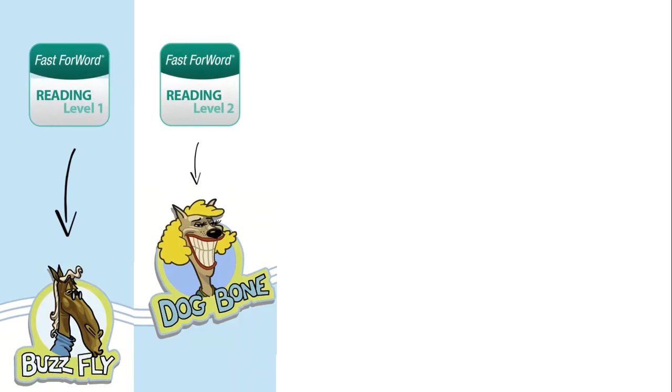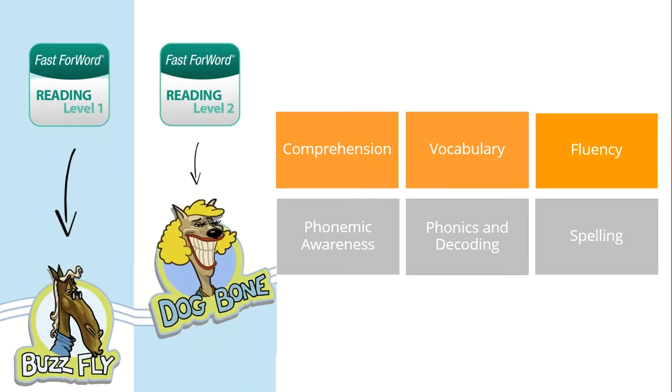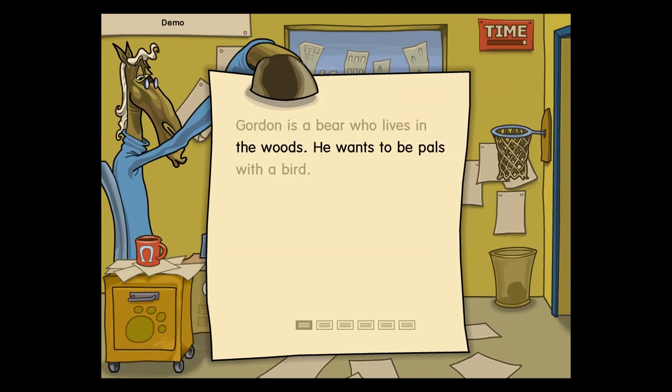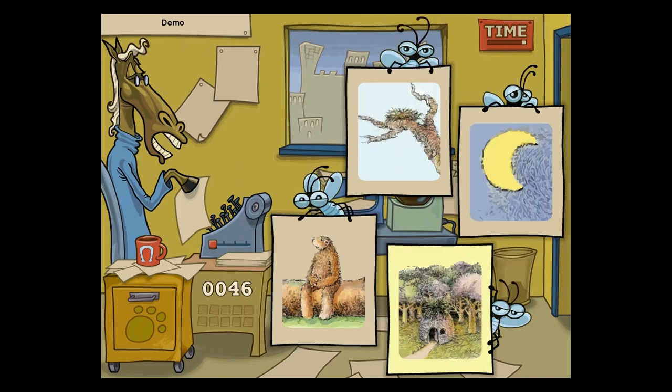Let's look at some reading comprehension exercises. Buzz Fly from the Reading 1 program and Dog Bone from the Reading 2 program. These games focus on building early reading comprehension skills while increasing oral vocabulary and also reading fluency by providing the student with modeled fluent reading and repeated reading opportunities. Gordon is a bear who lives in the woods. He wants to be pals with a bird. Where does Gordon live? In the woods.